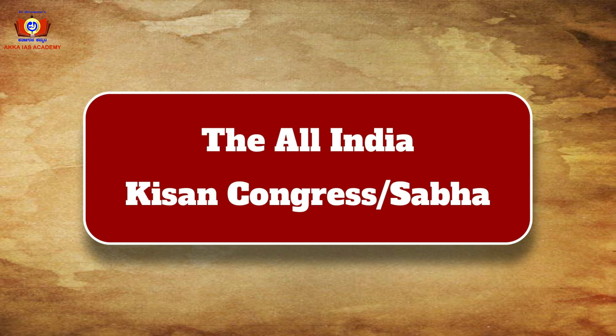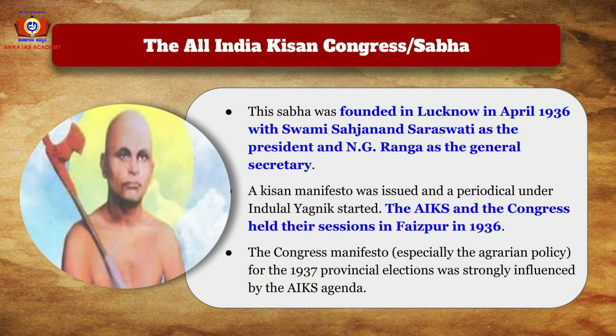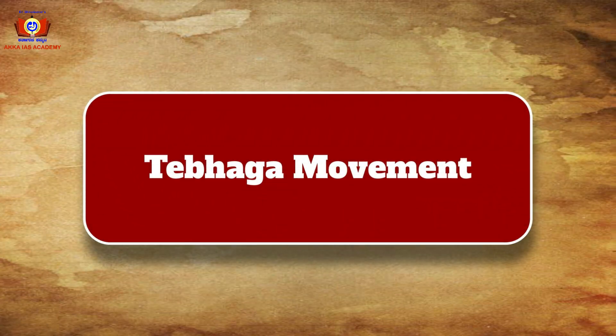The All India Kisan Congress or Sabha was founded in Lucknow in April 1936, with Swami Sajanand Saraswati as president and N.G. Ranga as general secretary. A Kisan manifesto was issued and a periodical started under Indulal Yagnik. The All India Kisan Sabha and the Congress held their sessions in Faizpur in 1936, and the Congress manifesto, especially the agrarian policies for the 1937 provincial elections, was strongly influenced by the All India Kisan Sabha agenda.